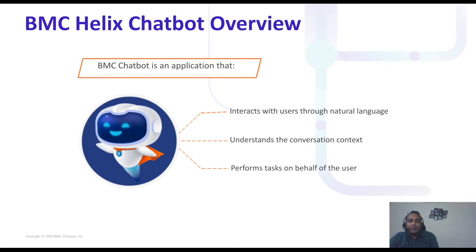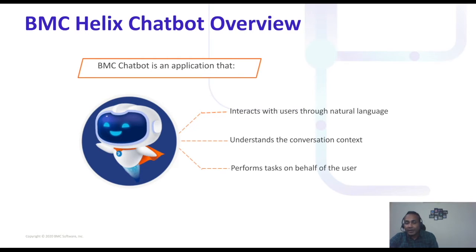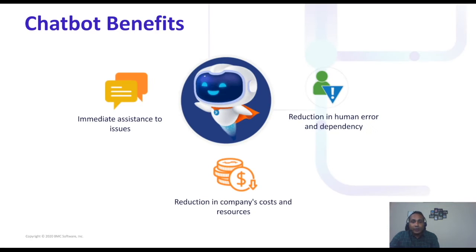For example, as an end user you connect to the chatbot and say you have an issue with your VPN. The chatbot will understand whatever you type related to VPN, pull up knowledge articles, and ask if that solved your issue. If not, it will ask you to describe the issue further, and based on your responses it will probably submit a request on your behalf and confirm.